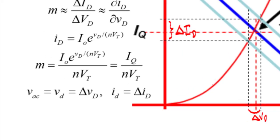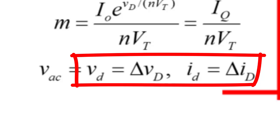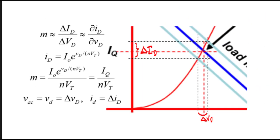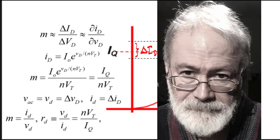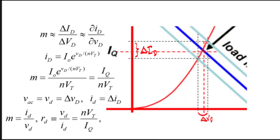Using lowercase notation: lowercase v_d is the change in diode voltage produced by the small signal, and lowercase i_d is the change in diode current. The slope m equals i_d / v_d. Its inverse has units of ohms — v_d / i_d — and we call that r_d, the dynamic resistance of the diode at the quiescent point: r_d = n·V_t / I_Q. To the small signal, the diode does not look like a diode; it looks like a resistor r_d = n·V_t / I_Q.